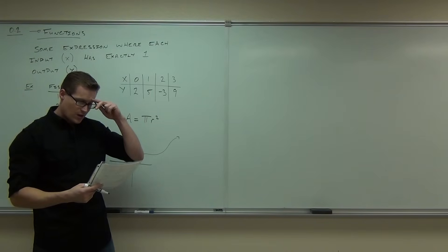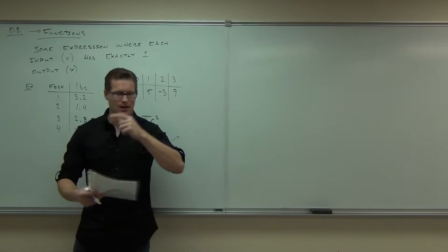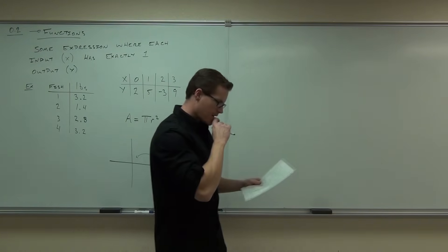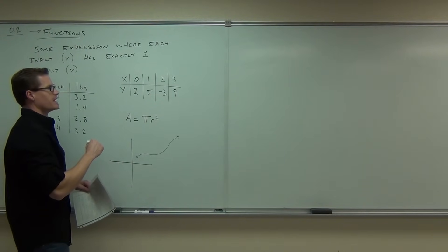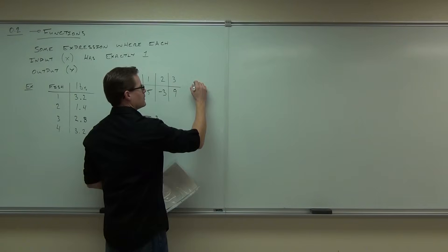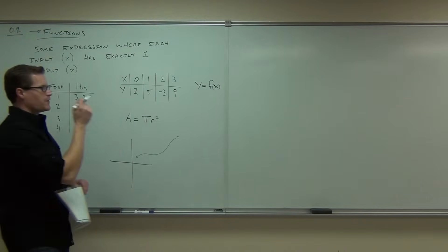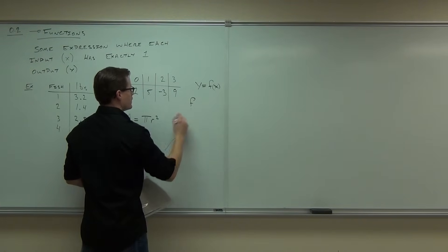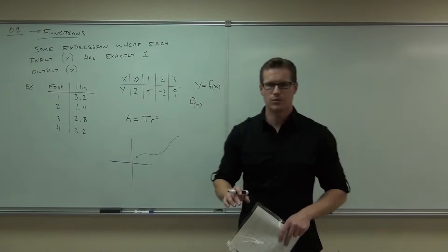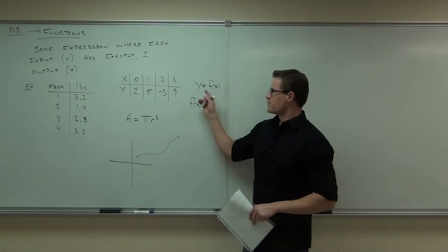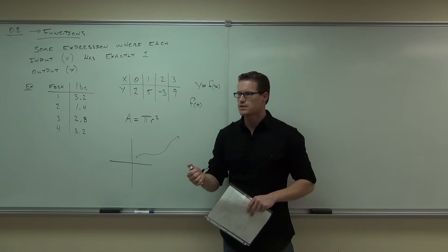Just one note: functions have to have only one output for each input — that's the key thing. Now, with y = f(x), could you find f(0)? That means: if y is f of x, and I'm asking for f(0), you go to the input of 0 and look up the output. The answer is 2.